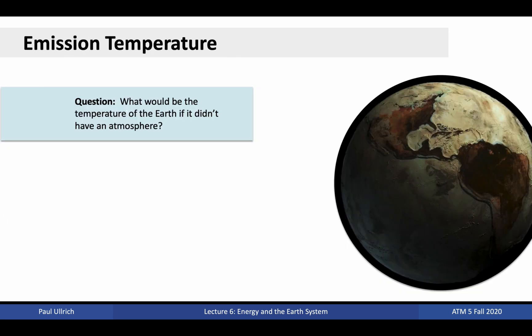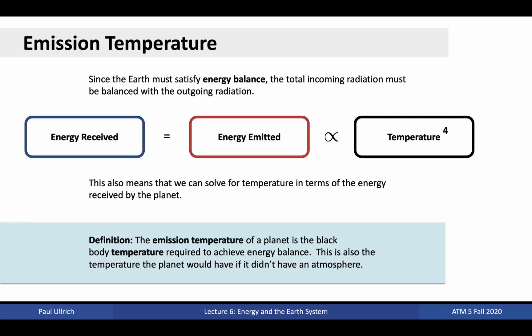So that prompts the question, what would the temperature of the Earth be if it didn't have an atmosphere? What difference does the atmosphere make? We've already learned all the physical principles needed to answer this question. We know the Earth is in a state of energy balance, which means that energy received equals energy emitted.